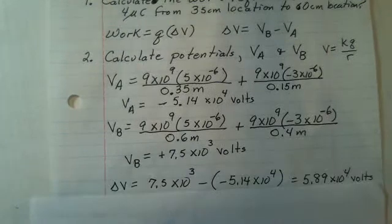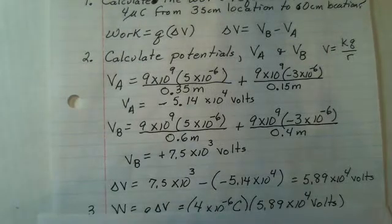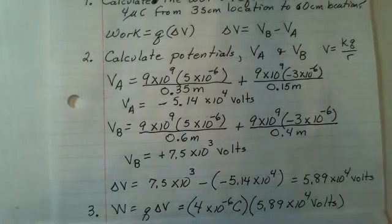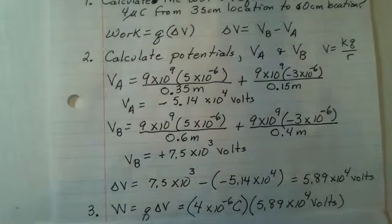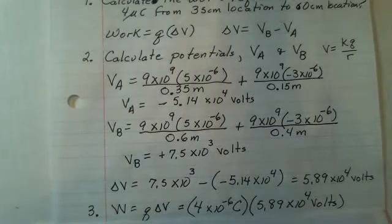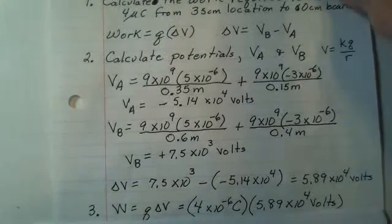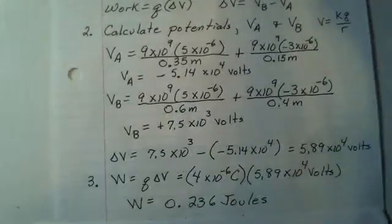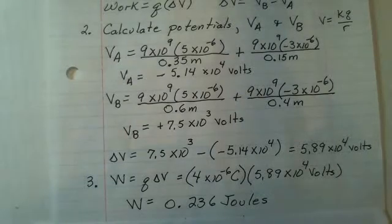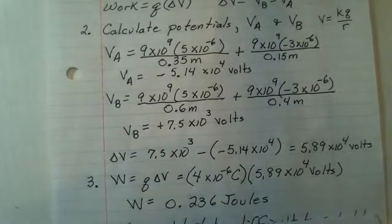Then, we can do our work calculation. Q times delta V. The delta V is 5.89 times 10 to the fourth volts. Our Q times delta V, 4 times 10 to the minus six coulombs, is the charge that we're moving from the two locations. And I end up with 0.236 joules. That's the work required to move this four microcoulomb charge between the two locations.